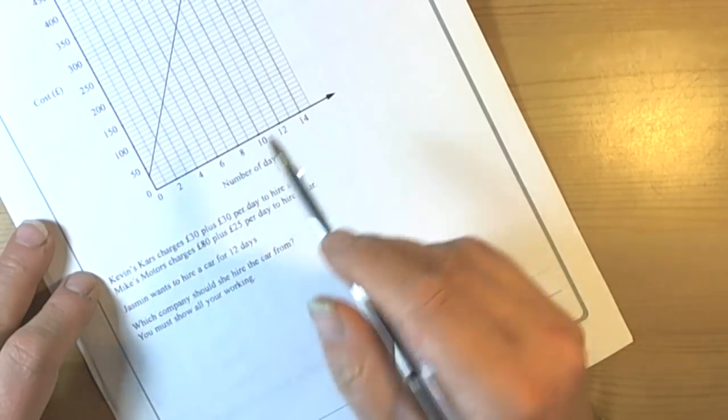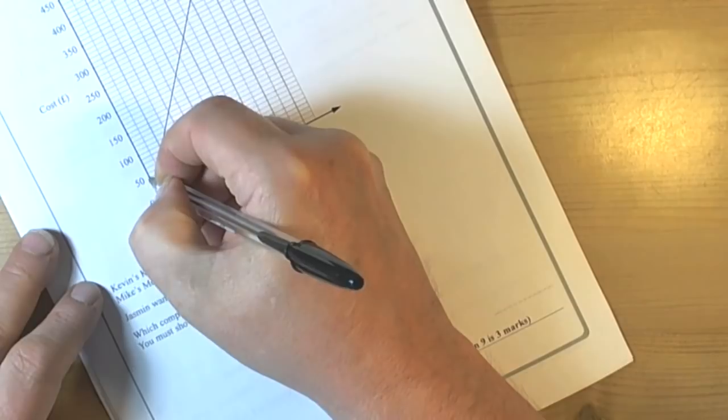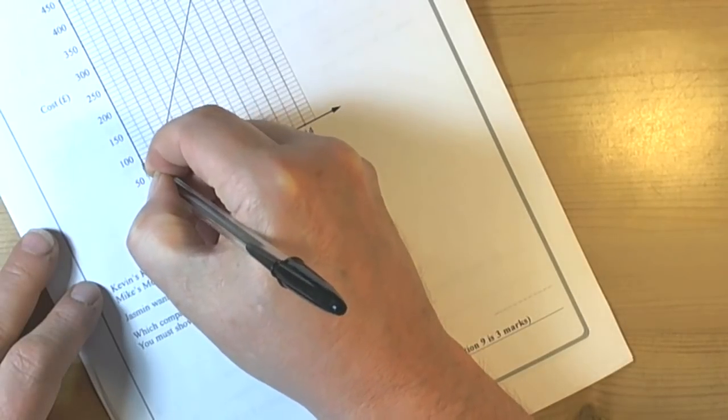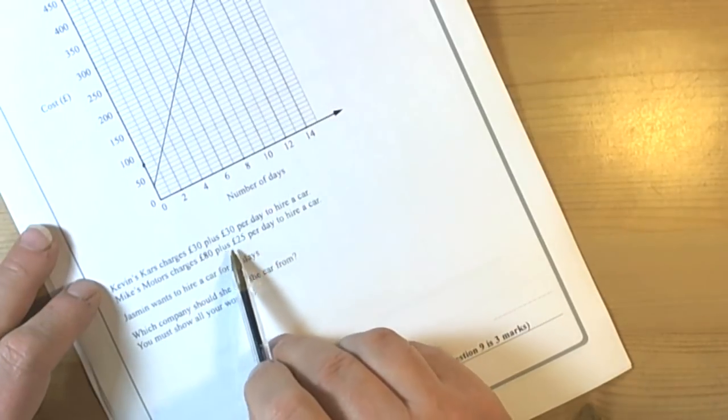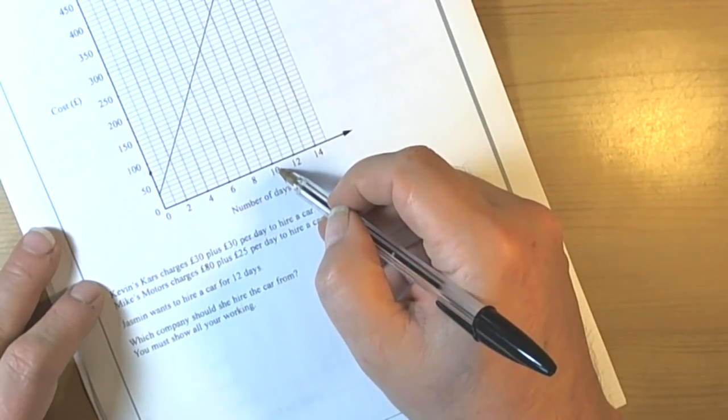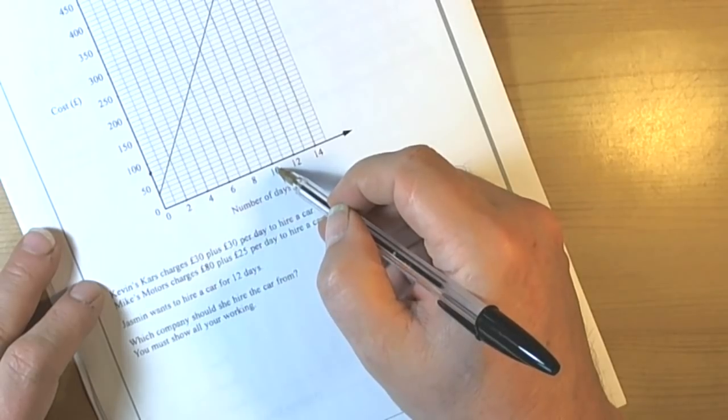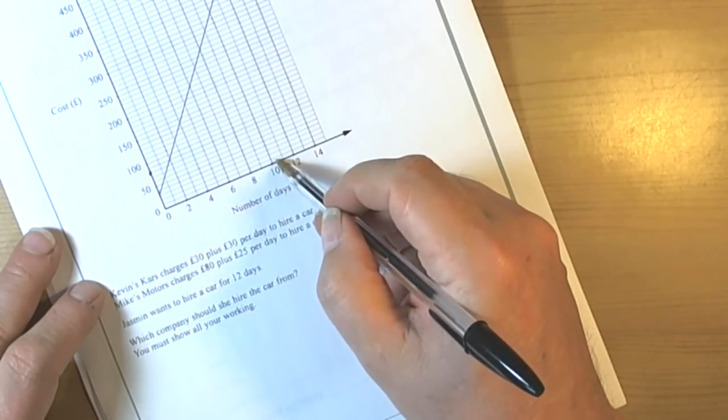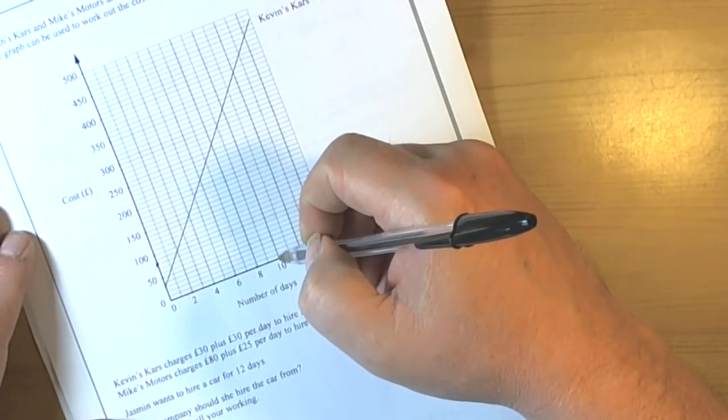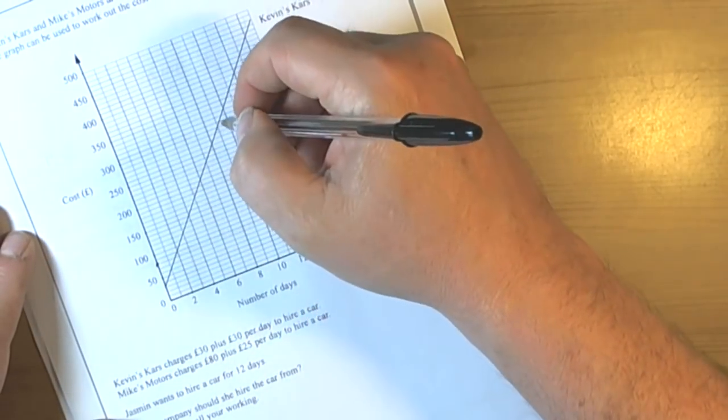Mike's Motors charges £80, so their graph is going to start at £80, and they're charging £25 per day to hire. If I do it for 10 days so we can get a couple of points in, 10 times £25 is £250 plus the £80 is £330. So for 10 days it's going to cost us £330.